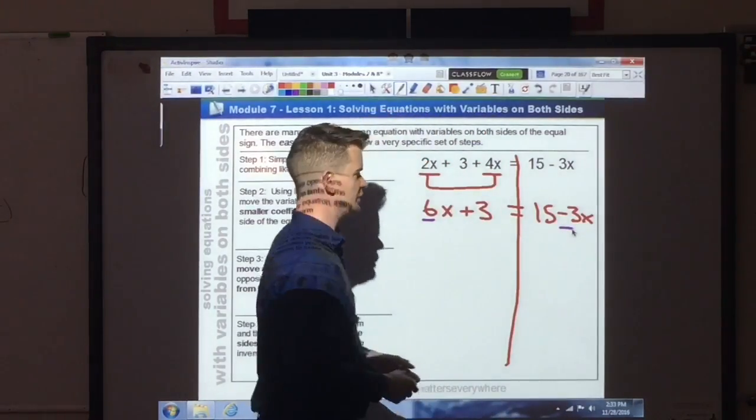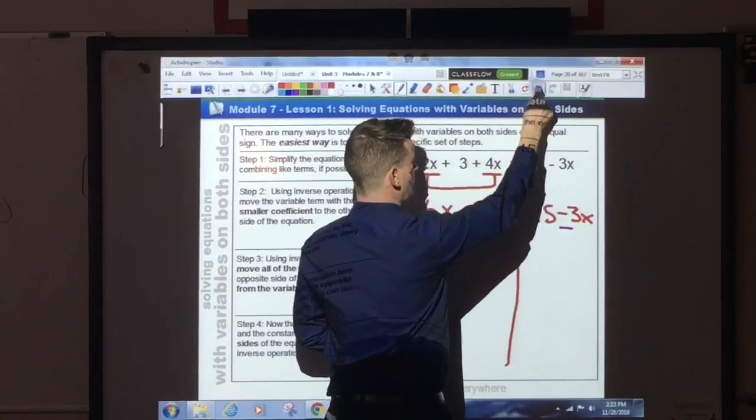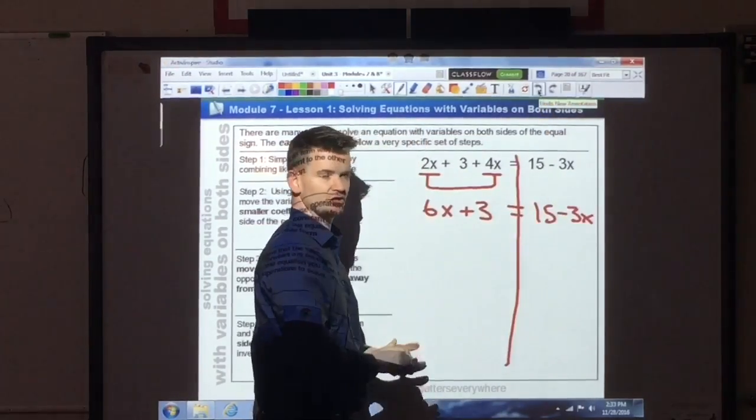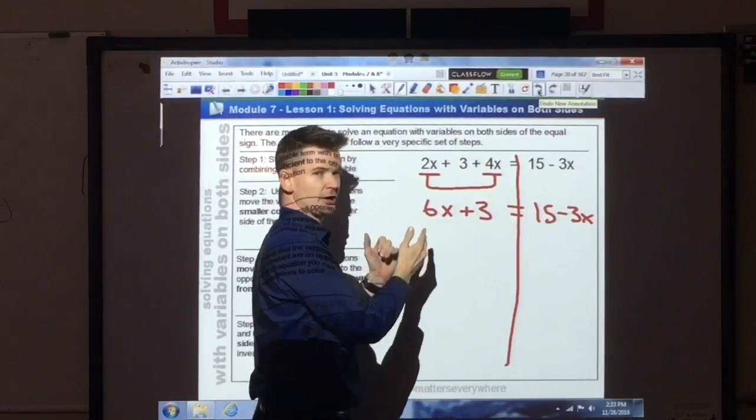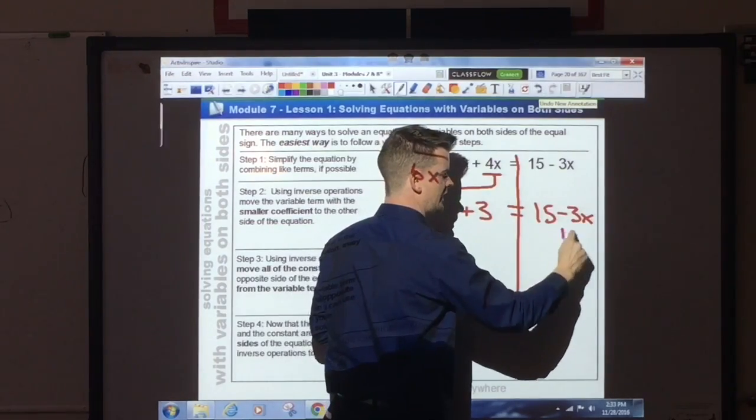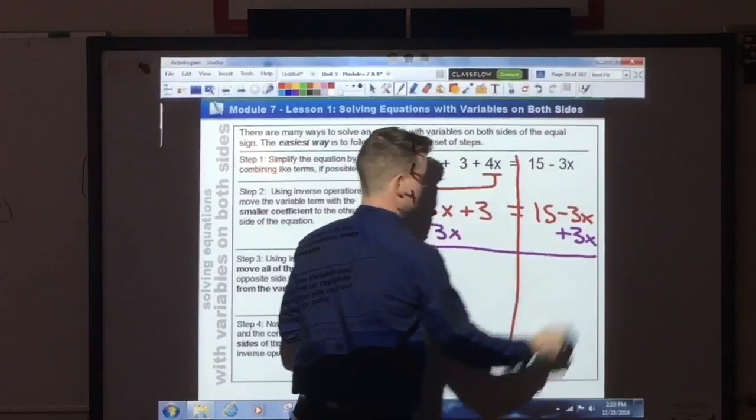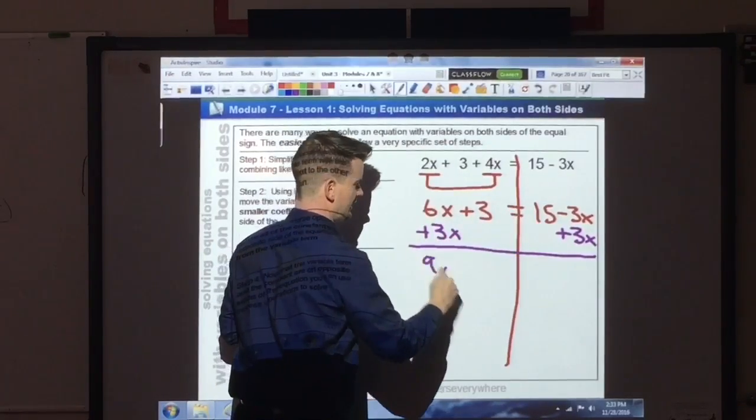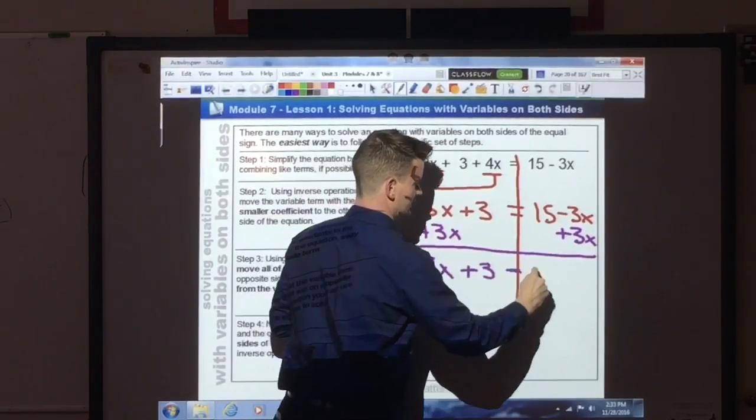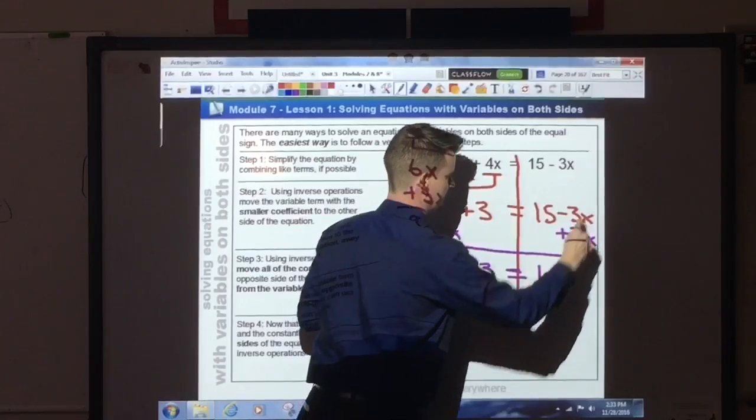Which one's smaller? Negative 3. So what I'm going to do is I'm going to move the term with the smaller coefficient to the other side of the equation. That way all my variable terms are on one side. Now, so the opposite of negative 3x, positive 3x. I do that to both sides. Work from left to right. 9x plus 3 is equal to 15. Those cancel.